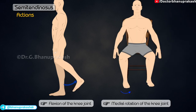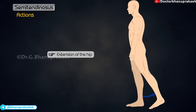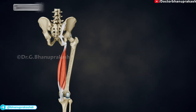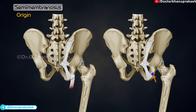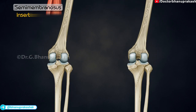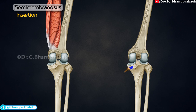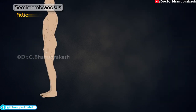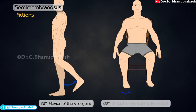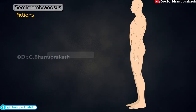Semimembranosus originates from the upper lateral part of the quadrangular area of the ischial tuberosity, and is inserted onto a horizontal groove on the posterior surface of the medial condyle of the tibia. It is supplied by the tibial division of the sciatic nerve. Its actions are flexion and medial rotation of the knee, and extension of the hip.